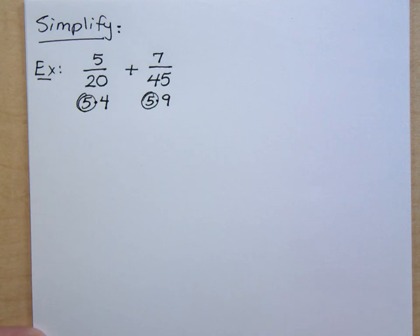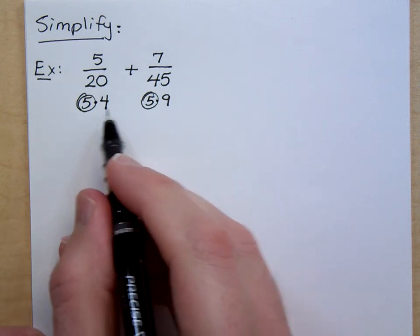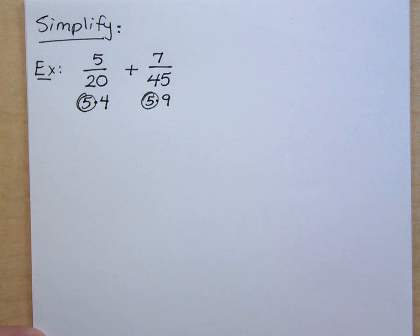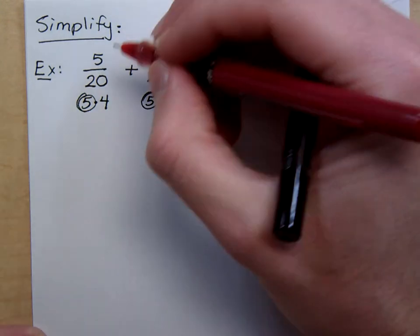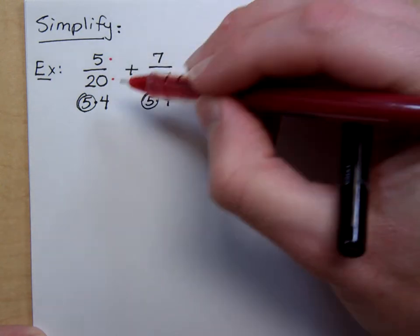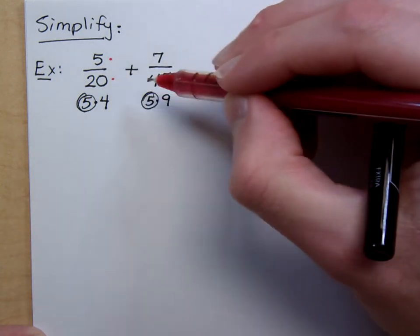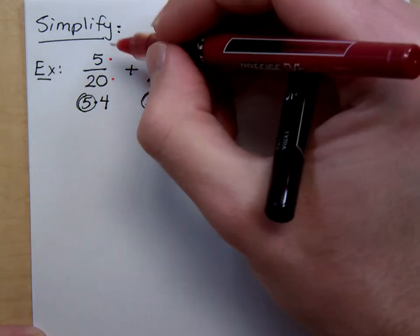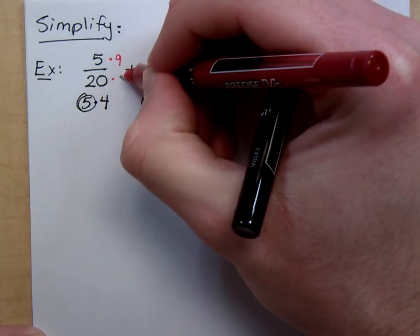And the trick that I was just showing you on the board is, since 4 and 9 don't have anything in common, you can use those to get your common denominator. So, what factor is missing here? He's got the 4, he just doesn't have the 9, so I can multiply this by 9 over 9.